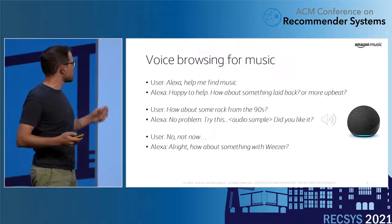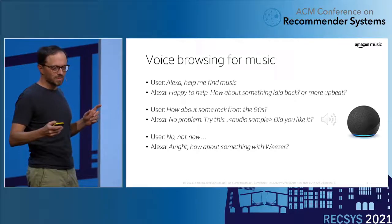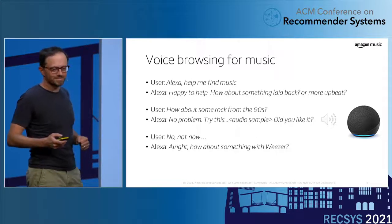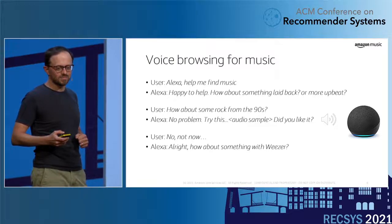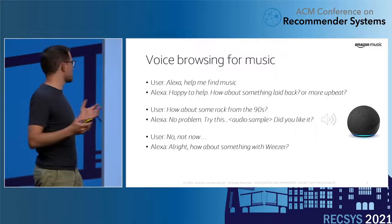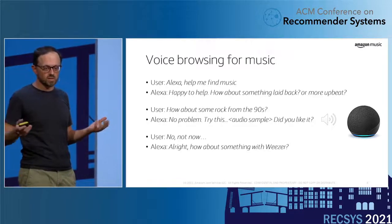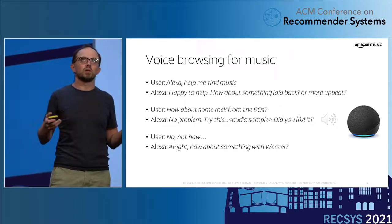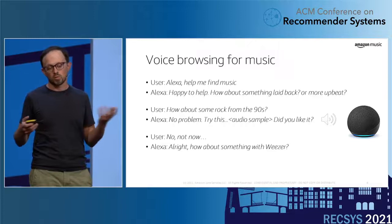And it sounds like this. [audio sample plays] So if you're not into grunge music in the morning, you can just say you don't want that and then provide other constraints. Alexa can choose to ask more questions. Essentially, the conversation ends when the user accepts the recommended content by starting a playlist, or the user abandons.